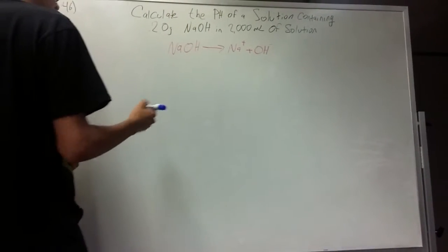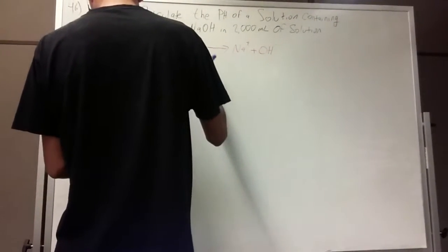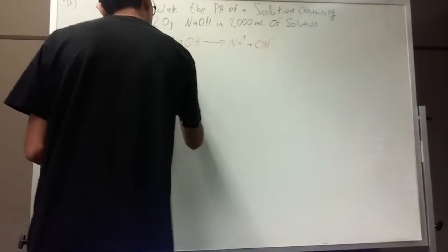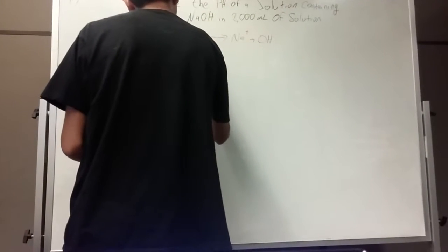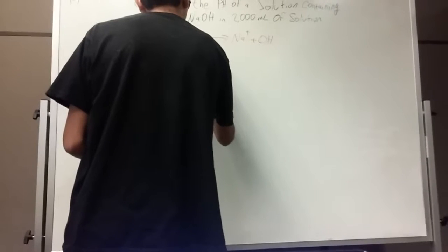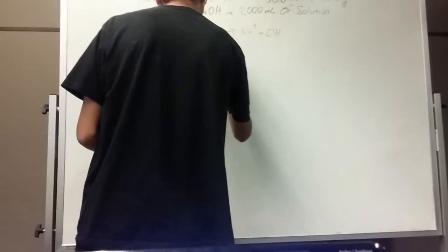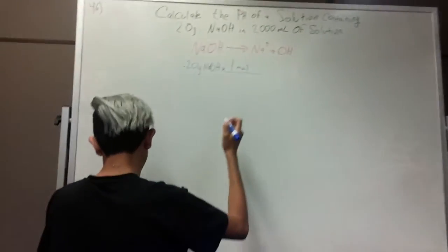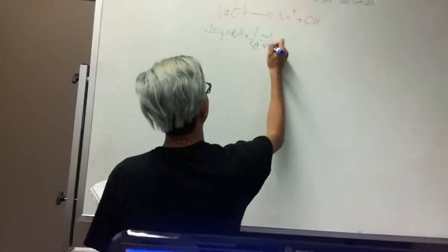First, you have to find your molarity. So for this, you get your grams of solution. So 0.20 grams of sodium hydroxide times the 1 mole over the molar mass, which is 39.99.